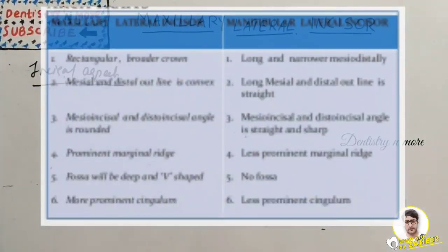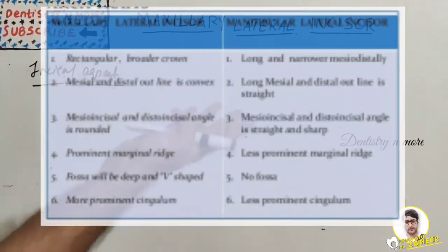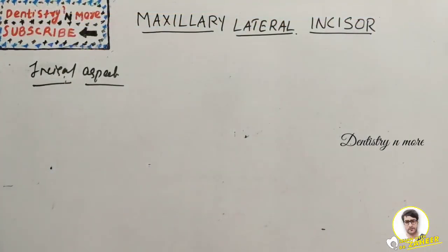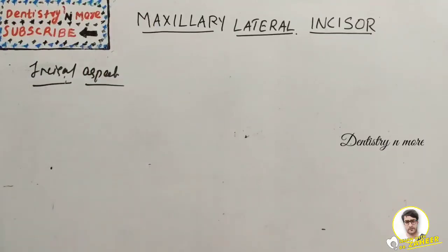So you can easily make out the differences between maxillary and mandibular. Next we have the maxillary canine. Make sure you learn the maxillary central incisor properly, as it makes learning the maxillary lateral incisor much easier. I'll come up with the maxillary canine in my next session. Thank you.